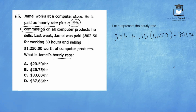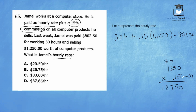Let's start by multiplying 1,250 times 0.15. Remember that the final answer needs two decimal places. 15 times 5 is 75, carry the 7. 15 times 2 is 30 plus 7 is 37, carry the 3. 15 times 1 is 15 plus 3 is 18. Moving the decimal two places to the left, his total commission is $187.50.